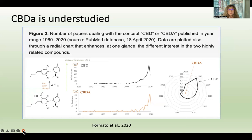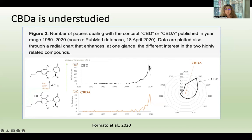CBDA is understudied. Looking at these charts: CBD has 600 publications, with a big spike starting around 2010–2013. A lot of that had to do with parents of children with intractable epilepsy using CBD, which prompted scientists to follow up with research. Other indications like inflammation, neurodegenerative disorders, and cancer also drove that spike — around 600 research articles per year just in the last couple of years.